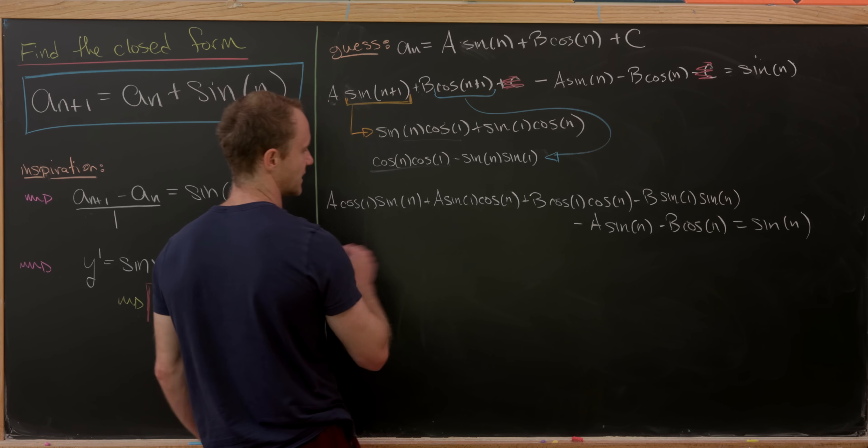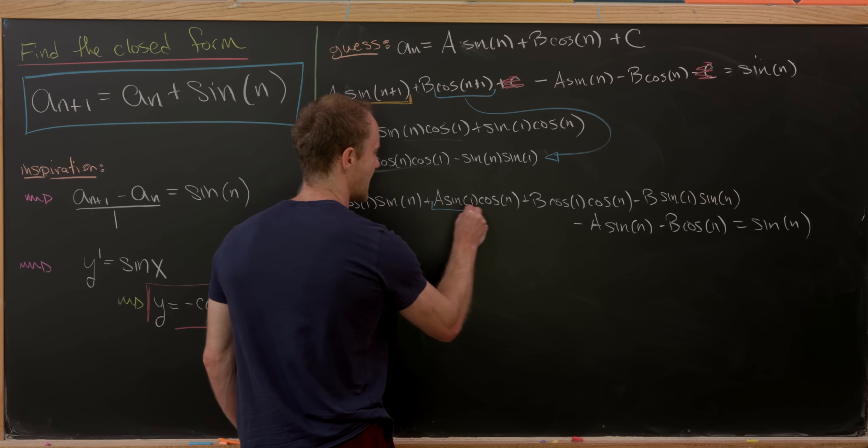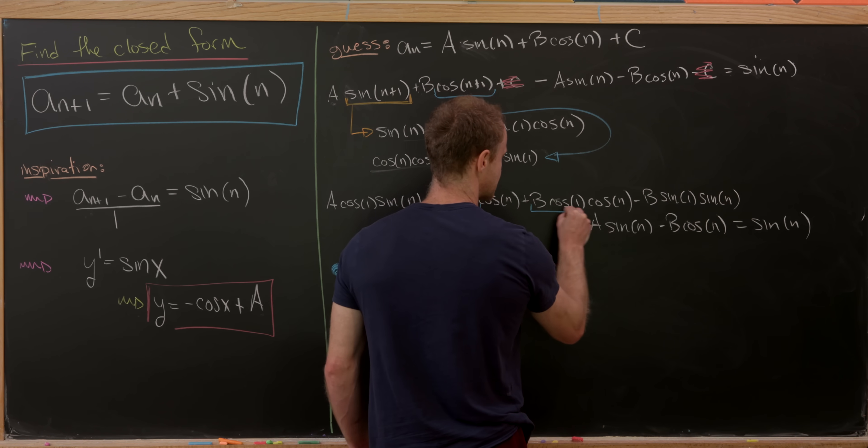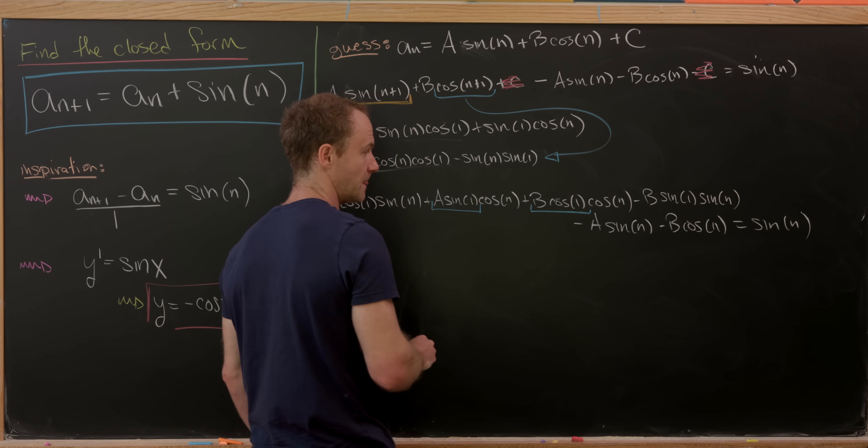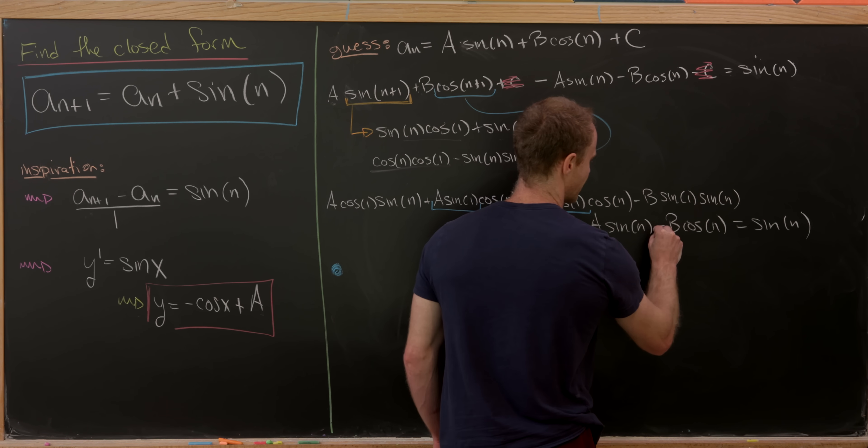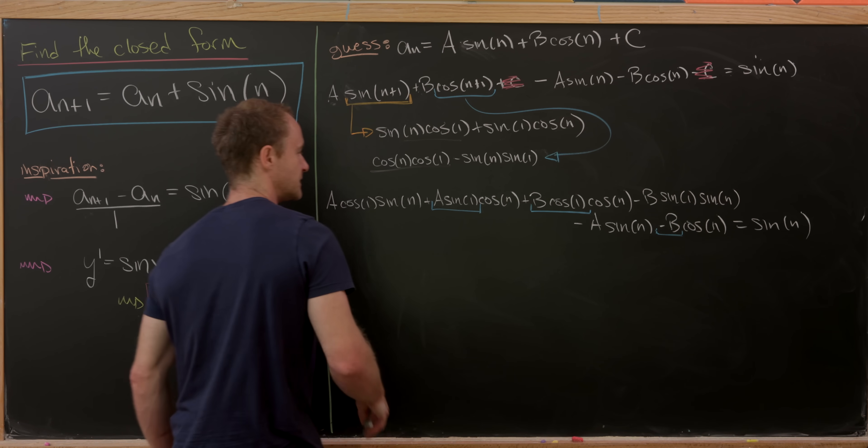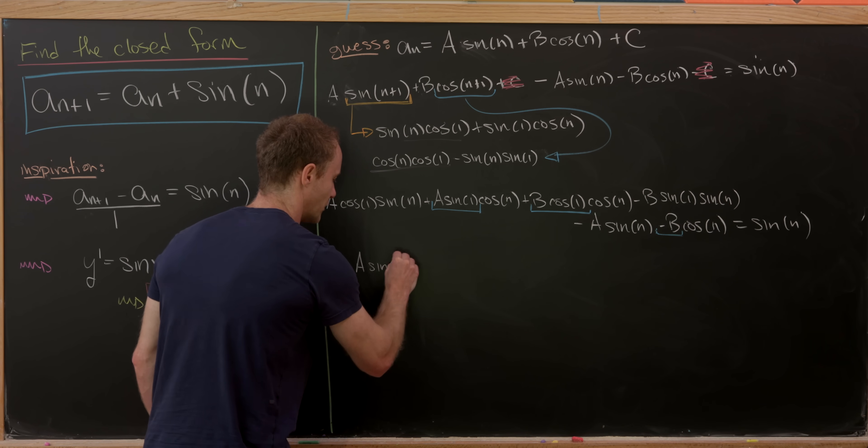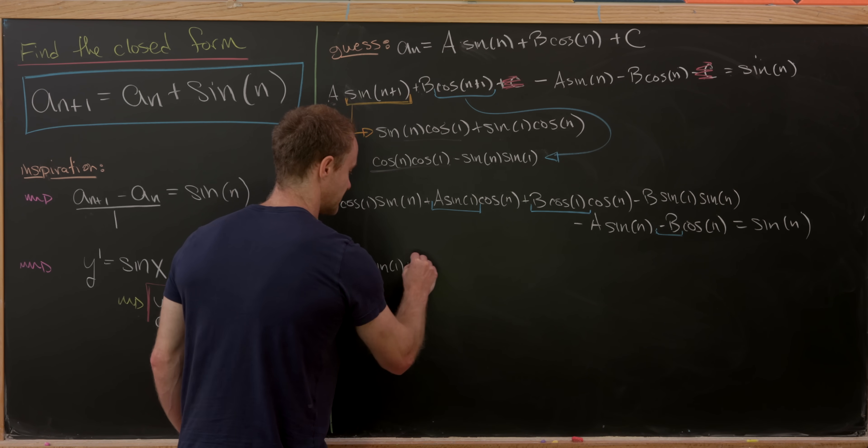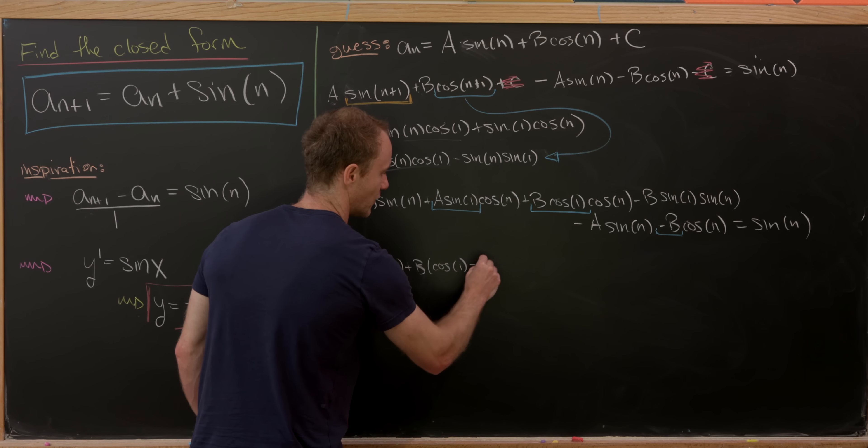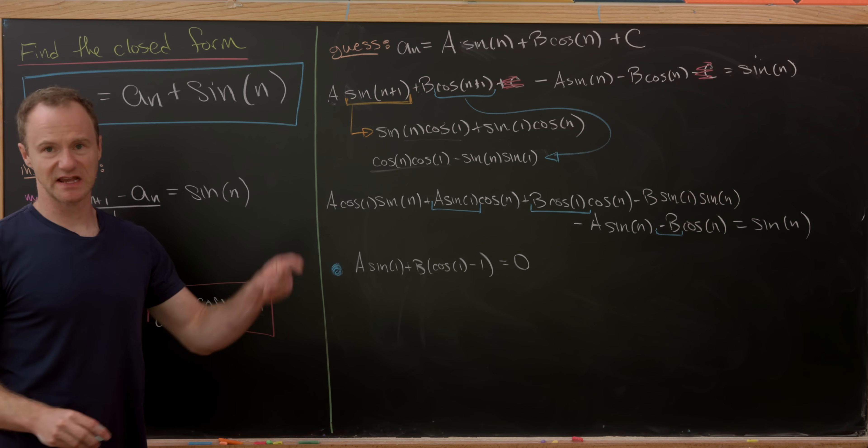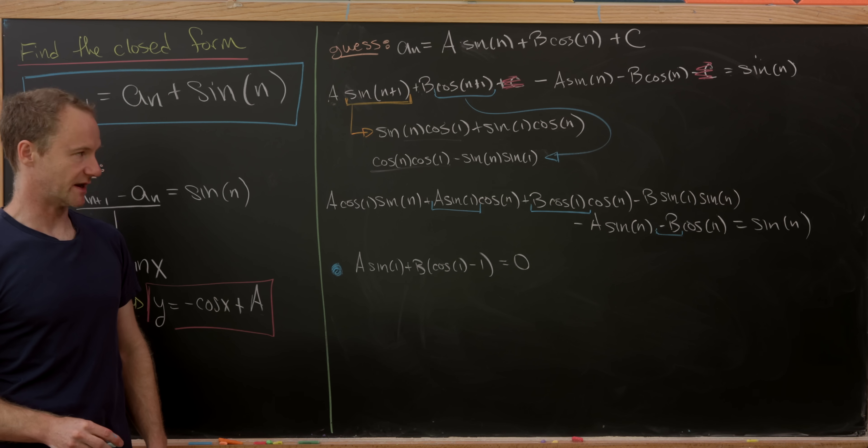So let's start with the coefficients of cosine of n. So here we have a times sine of 1. Here we have b times cosine of 1. And then finally here we have minus b. So that'll leave us with a times sine of 1 and then plus b times cosine of 1 minus 1 equals 0. Because I guess I should say there's no cosines on the right hand side.